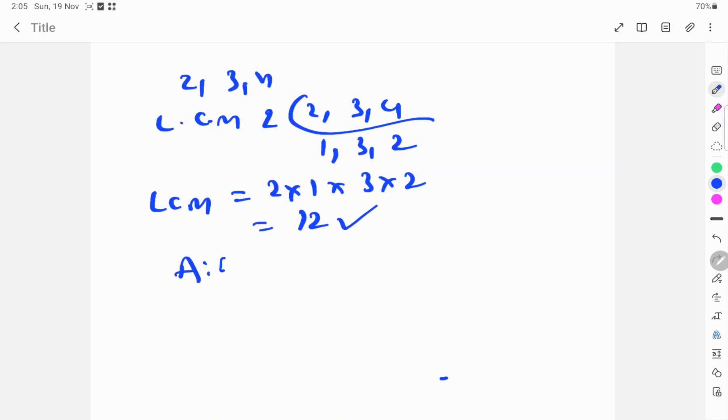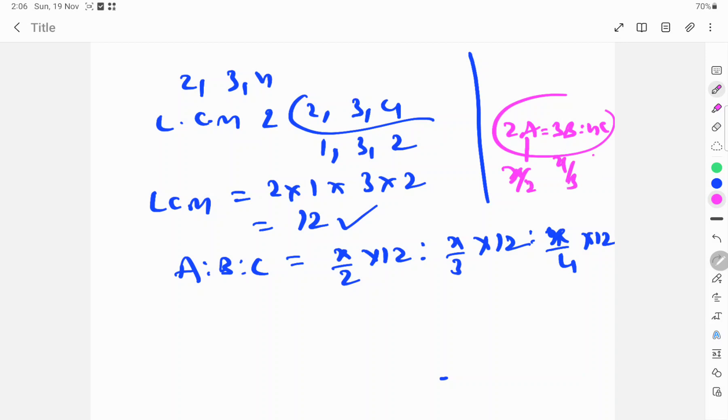We need A is to B is to C. So take X by 2 times 12, X by 3 times 12, and X by 4 times 12, because A is X by 2, B is X by 3, and C is X by 4.